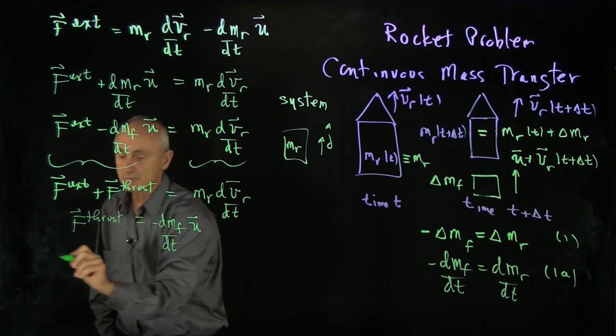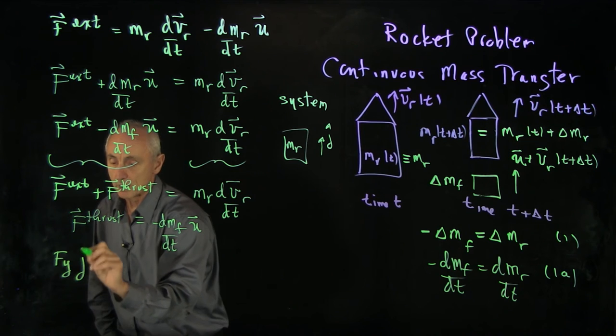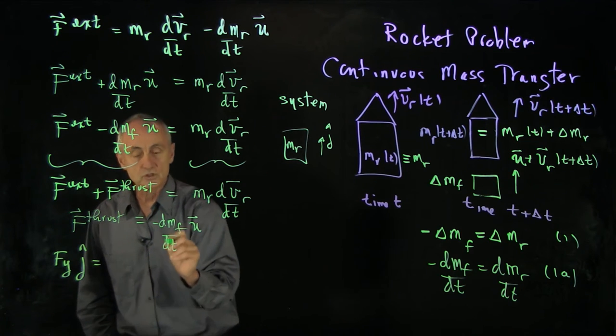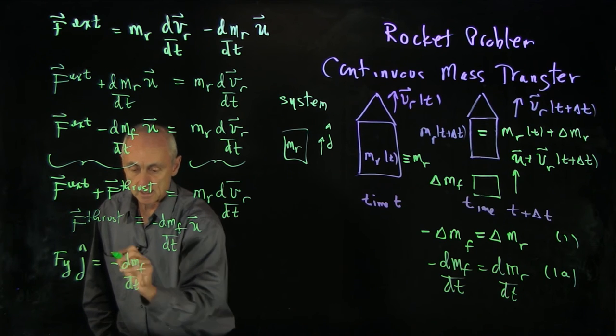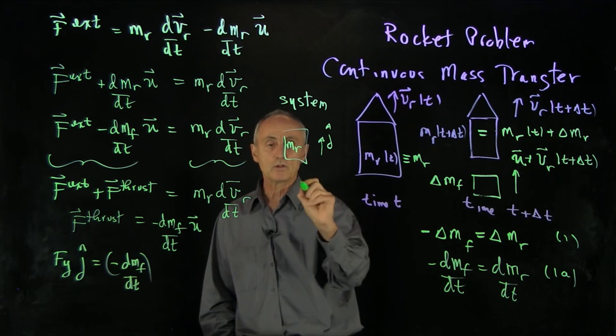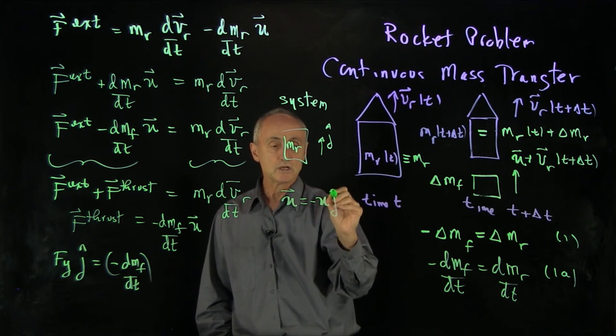Then our thrust as a vector, we'll write it as a y component, is equal to minus dm fuel dt. Now, what is that relative speed? Well, the fuel is being ejected backwards. So that's minus mu j hat.